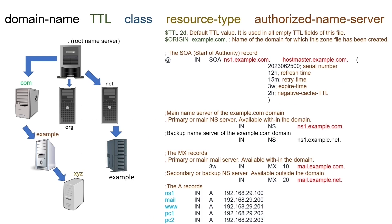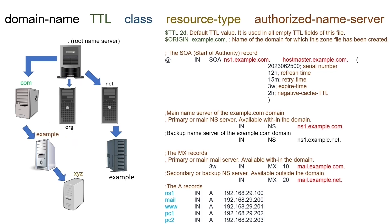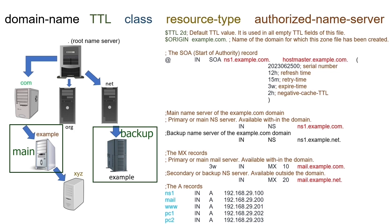DNS is an essential service. You should configure at least two name servers for each domain. You should configure the primary name server within the domain and the secondary name server outside the domain in a different geographical location. This setup allows resolver systems to access resources even if the primary name server fails.